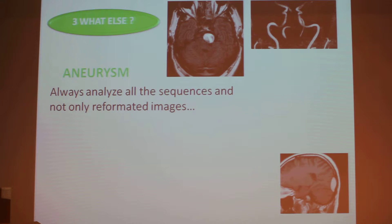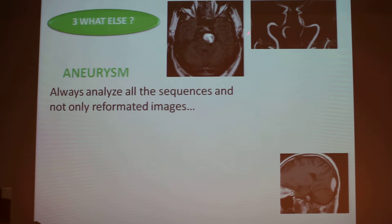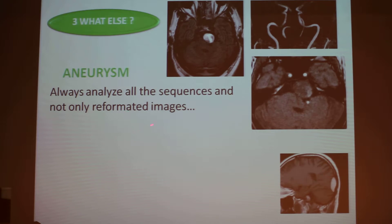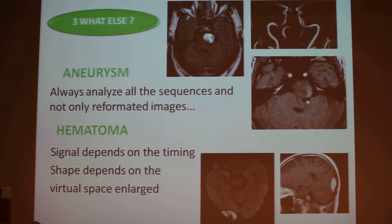What else? Aneurysm. Be careful with aneurysms. When they are completely thrombosed they can present as a high-signal ball on FLAIR. They can be not seen on MRI because they are thrombosed — use all the sequences. Especially when you perform an MRI, use the primitive slices and not only the reformatted images. I always look at the axial slices because on the axial slices you can see the aneurysm very well. And hematoma: the signal depends on the timing, and the shape depends on whether it is epidural or subdural. When you have a biconvex shape it is probably extra-dural, and this has to appear on two different planes. If it is more diffuse it is probably subdural.